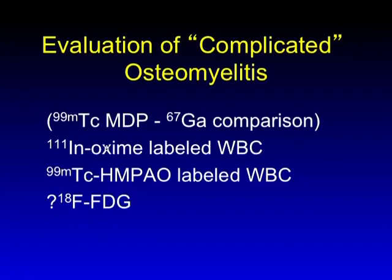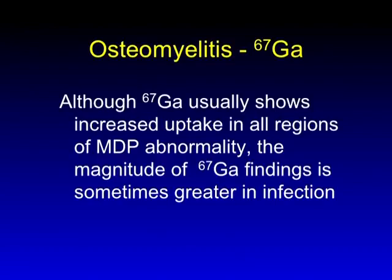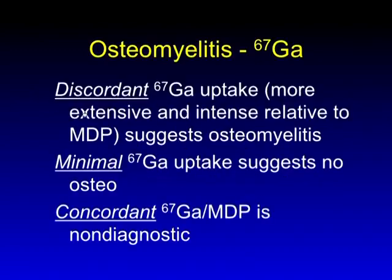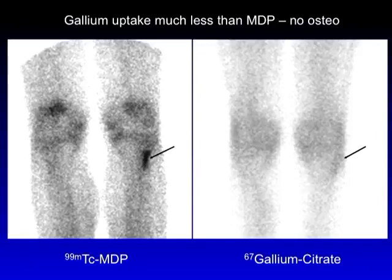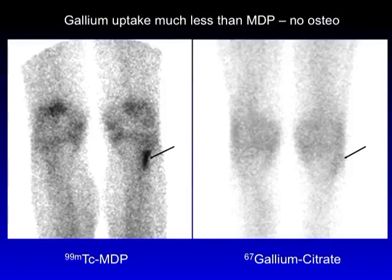Gallium imaging was introduced as a bone scanning agent, but it's a pretty poor one. It does show uptake in all kinds of bone abnormalities. If you have infection, sometimes you see gallium uptake more than expected. To determine that, you compare a gallium scan to an MDP study — if the gallium is more intense and more extensive, it's probably infection. But most of the time it looks about the same and is not really diagnostic, so we almost never use gallium imaging. Here's a patient with tibial plateau fractures, ongoing pain, and a grossly abnormal bone scan with poor soft tissue clearance. If you have almost no gallium uptake, you might argue that's less than expected and therefore not infection — but for the most part this doesn't work. In a nuclear world, we would do labeled white blood cell imaging.